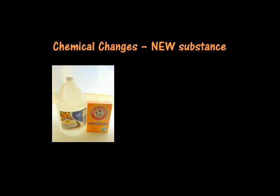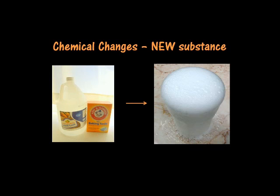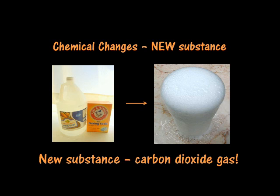Here's another example. If I take baking soda, a solid, and mix it with vinegar, a liquid, strange things will happen. It will start bubbling, foaming, and fizzing. This is because the baking soda and vinegar are creating a chemical change and producing a gas. In fact, the gas that is created is carbon dioxide. There was no gas there before, so we have actually created something new. A chemical change always makes a new substance.